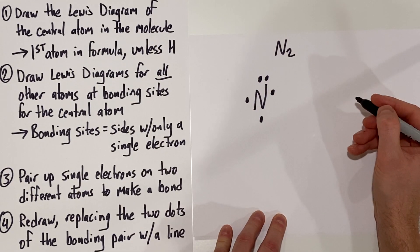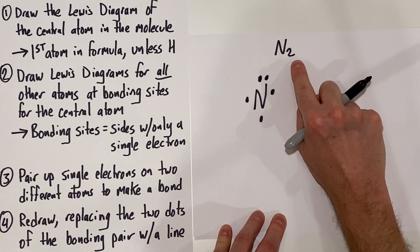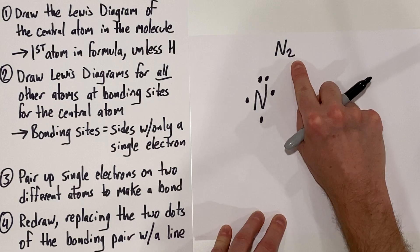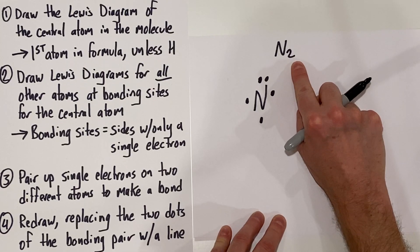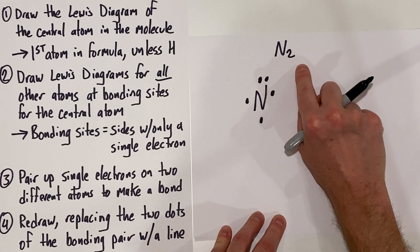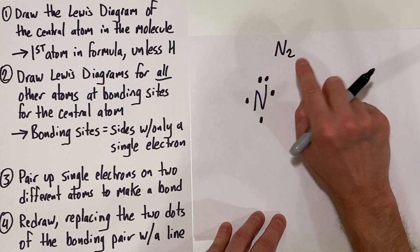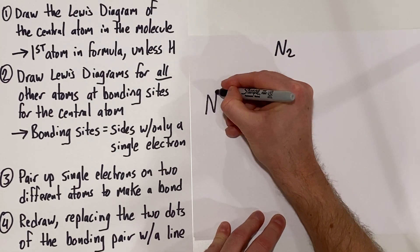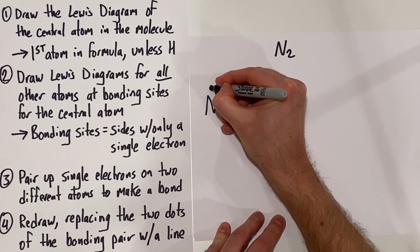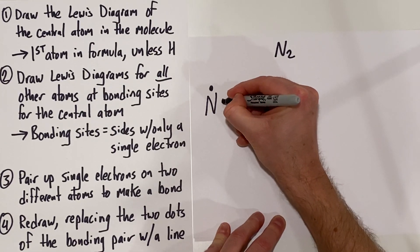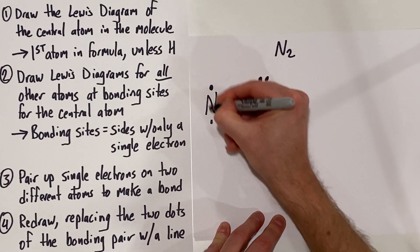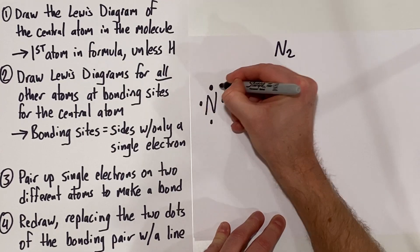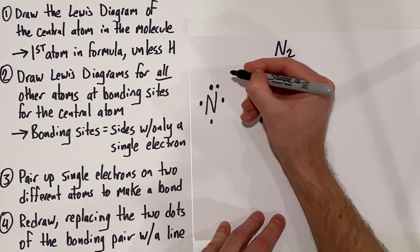Five valence electrons there. Now, of course, we have to draw a second nitrogen atom because it's N2, not just N. So we'll draw it over here — one, two, three, four, five.